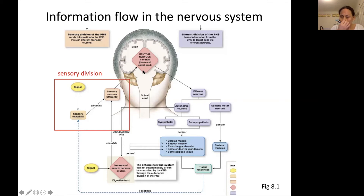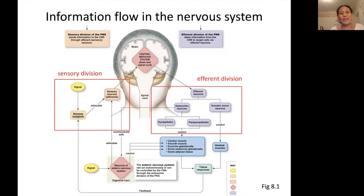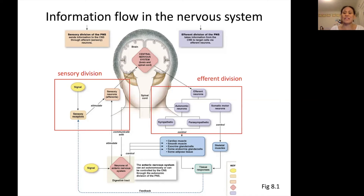Once that information is processed, it's going to be sent out. The central nervous system is going to send out commands via the efferent division. The efferent division is the part of the nervous system that carries information out from the central nervous system to the periphery — to the rest of the body.